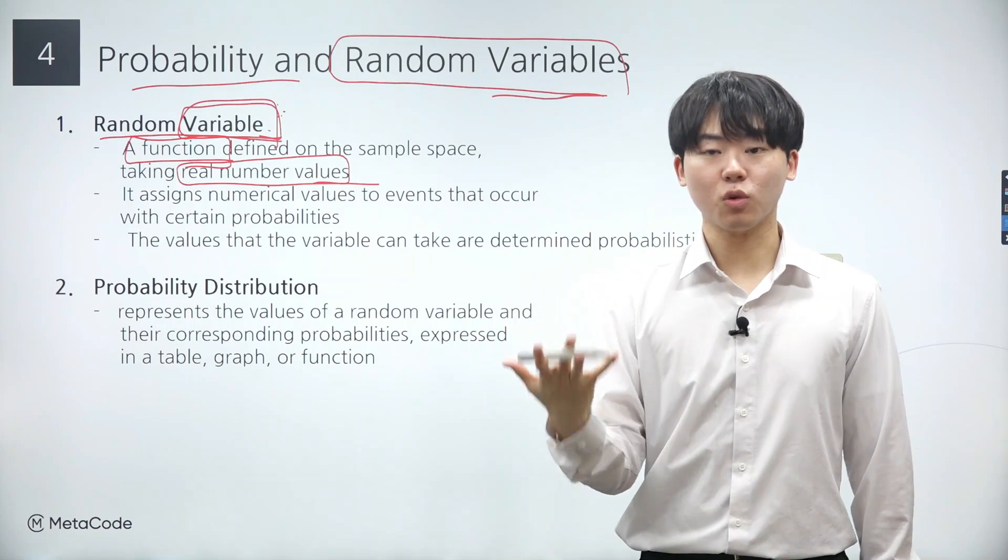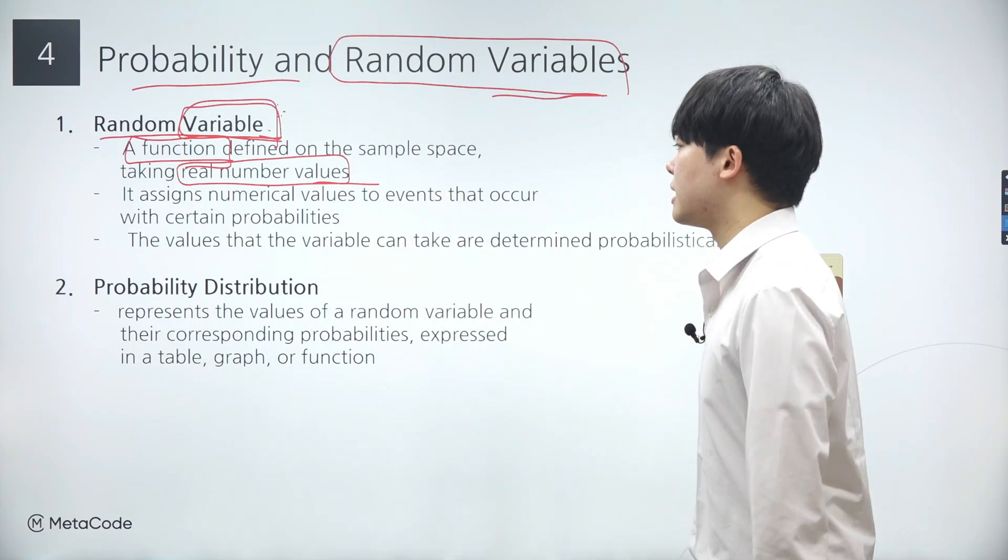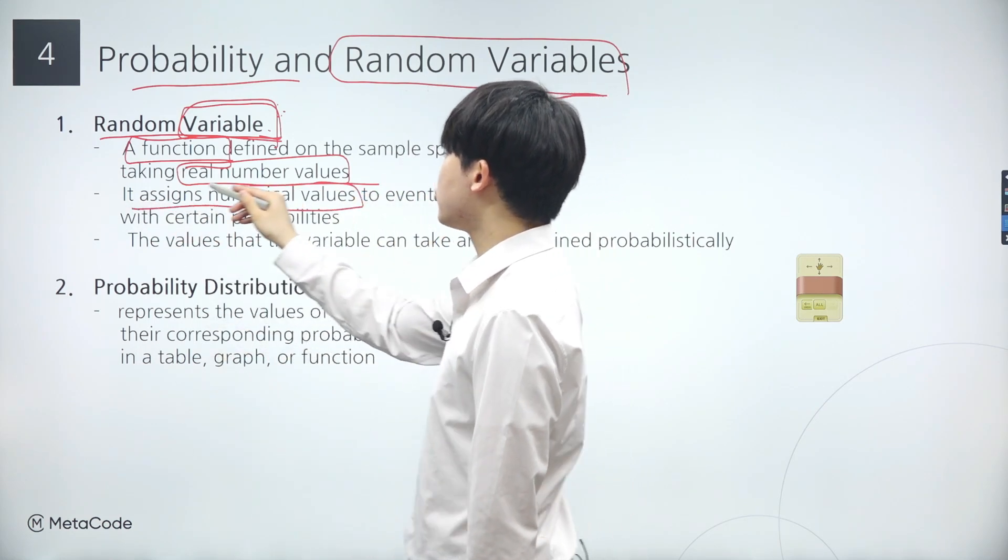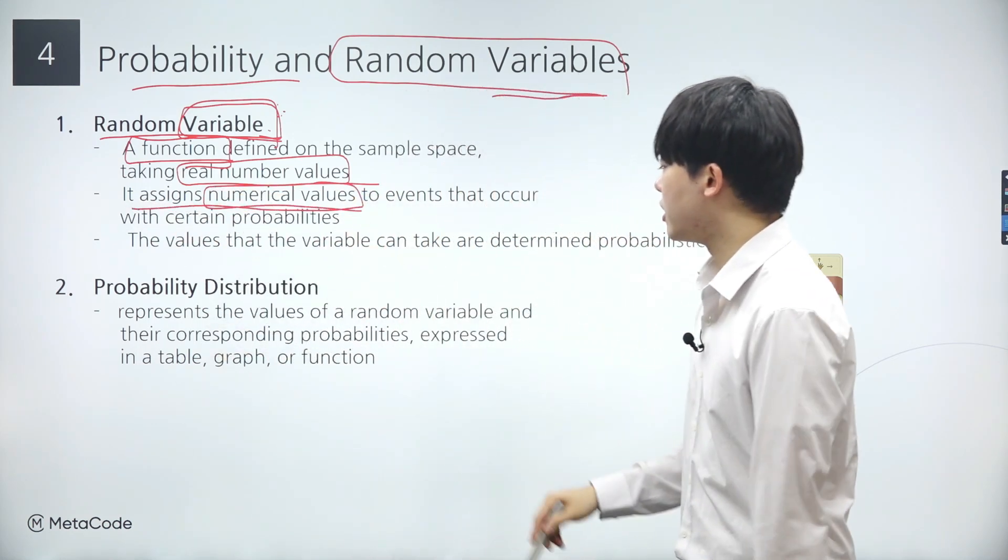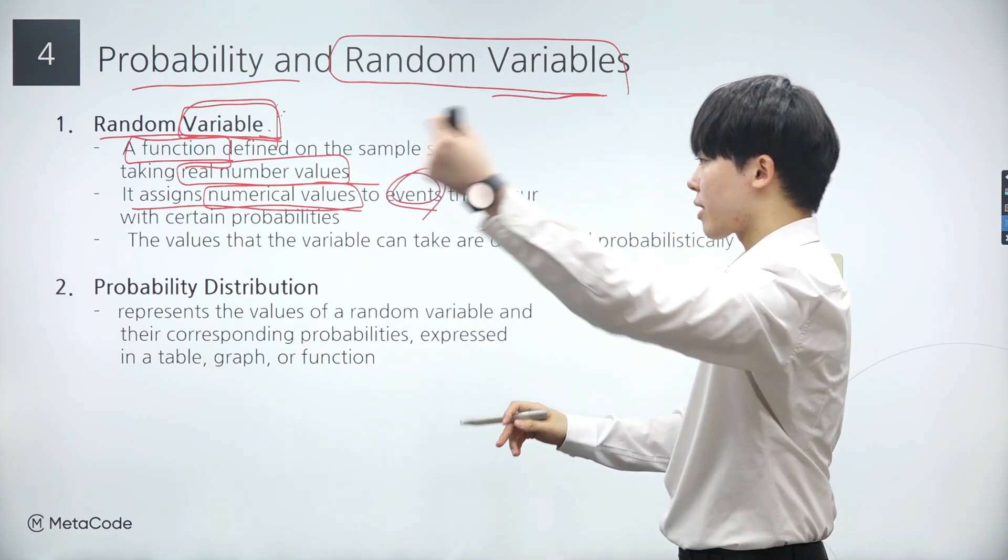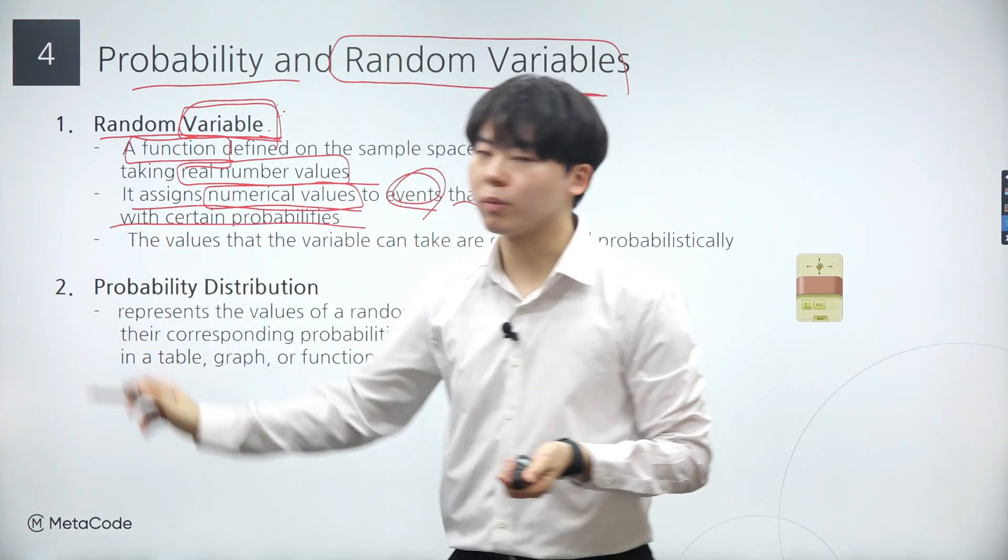This idea helps us understand and predict uncertain events by turning them into numbers we can work with. A random variable assigns numerical values to events that occur with certain probabilities. Taking the example of flipping a coin twice, event A represents getting exactly one head.